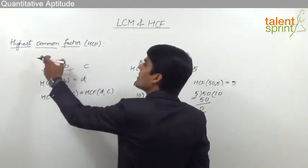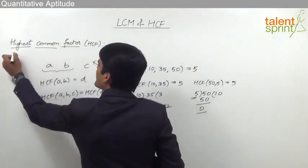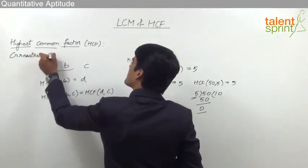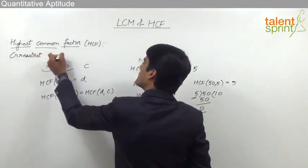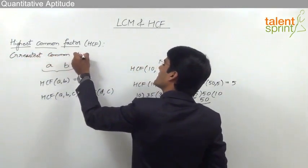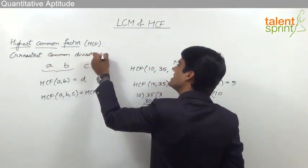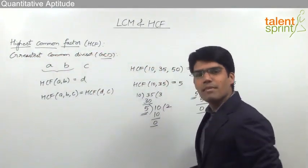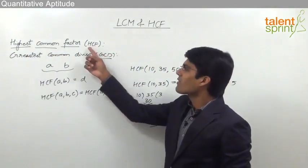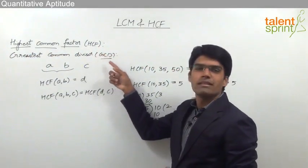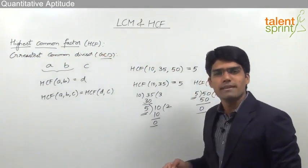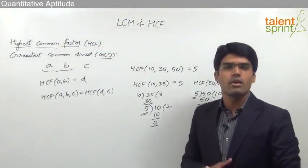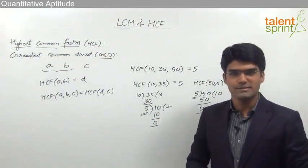One more point: the highest common factor is also known as the greatest common divisor, or GCD. So GCD and HCF mean the same thing, since a divisor is nothing but a factor. Either term can be used.